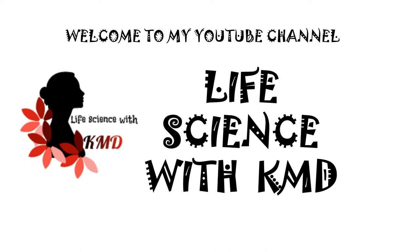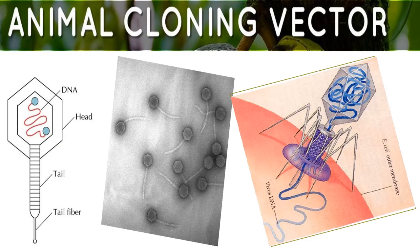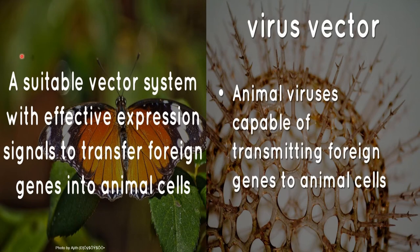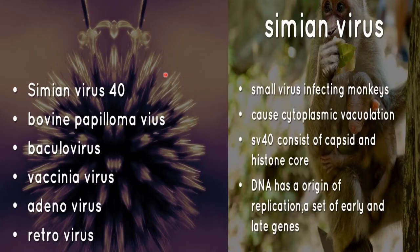Welcome to Life Science with KMD. Today I'm going to explain about animal cloning vectors. An animal vector should be a suitable vector system with effective expression signals to transfer foreign genes into animal cells. Virus vectors are animal viruses capable of transmitting foreign genes into animal cells. Some examples of animal vectors are: Simian Virus 40, Bovine Papilloma Virus, Baculovirus, Vaccinia Virus, Adenovirus, and Retrovirus.